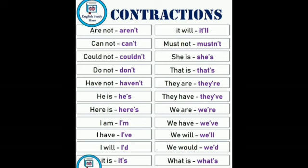Here are more contraction words: 'are not' — aren't, 'cannot' — can't, 'could not' — couldn't, 'do not' — don't, 'have not' — haven't, 'he is' — he's, 'here is' — here's, 'I am' — I'm, 'I have' — I've, 'I will' — I'll, 'it is' — it's, 'it will' — it'll, 'must not' — mustn't, 'she is' — she's, 'that is' — that's, 'they are' — they're, 'they have' — they've, 'we are' — we're, 'we have' — we've, 'we will' — we'll, 'we would' — we'd, 'what is' — what's.